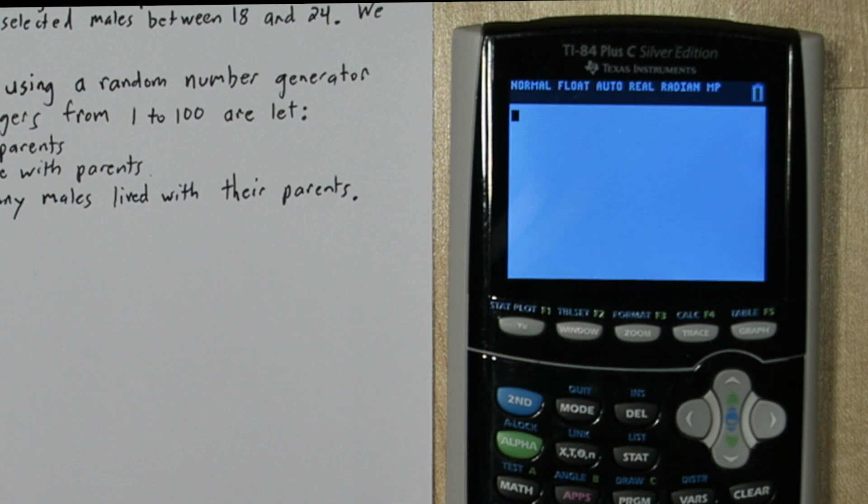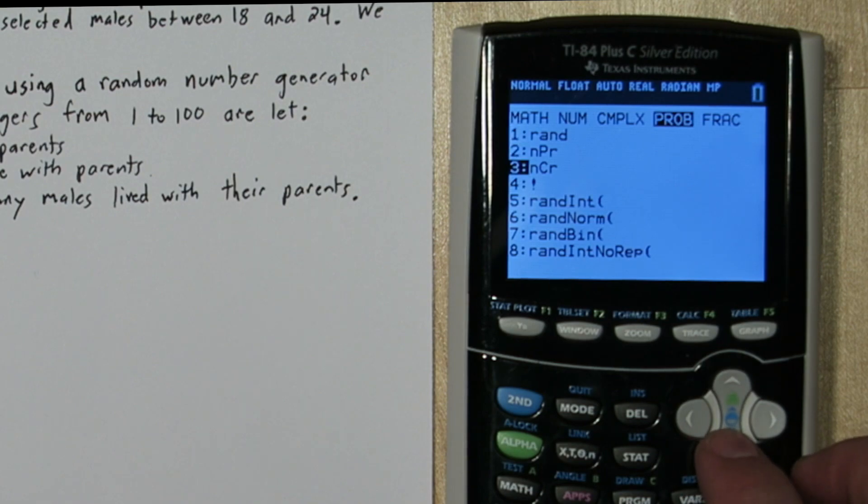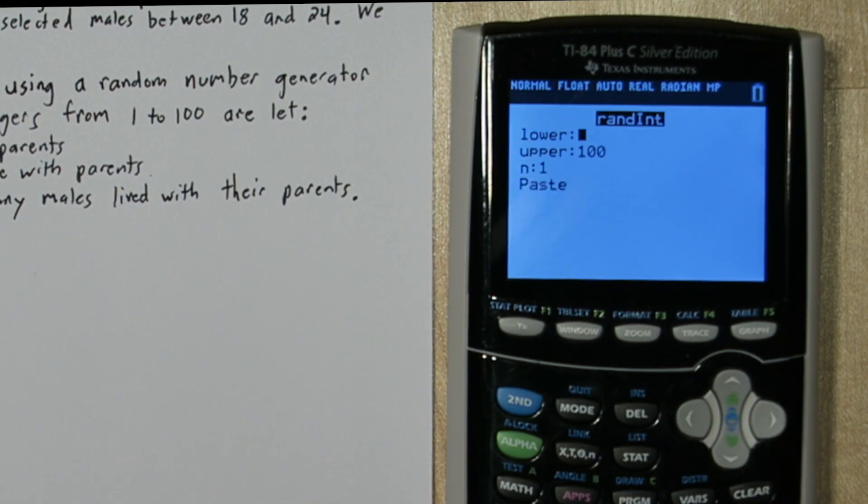Alright so here's how you do the simulation. Start by pressing the math button and then go over to probability. We're going to go down to random int, random integer, and it says what do you want for your lower limit? We'll choose 1 and for upper limit 100 and it says how many numbers do you want to generate? We want 10 since each of our samples needs to have 10 males in it. When I press enter on paste and then enter again, here's my data.